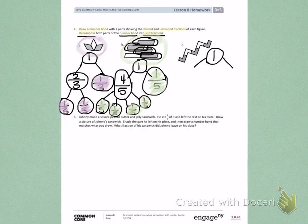Number 6. Johnny made a square peanut butter and jelly sandwich. He ate one-third of it and left the rest on his plate. Draw a picture of Johnny's sandwich. Shade the part he left on his plate and then draw a number bond that matches what you drew. What fraction of his sandwich did Johnny leave on his plate?